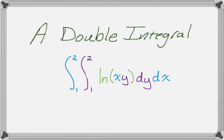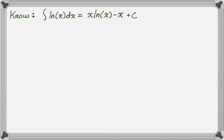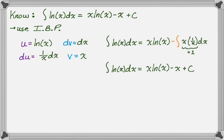First of all, you need to know how to integrate the natural log of x. The integral of ln(x) dx equals x·ln(x) minus x, plus c — but we're doing definite integrals so we don't worry about plus c. You arrive at this via integration by parts: let u = ln(x), dv = dx, compute du and v, then apply uv minus the integral of v du. You'll end up at x·ln(x) minus x.